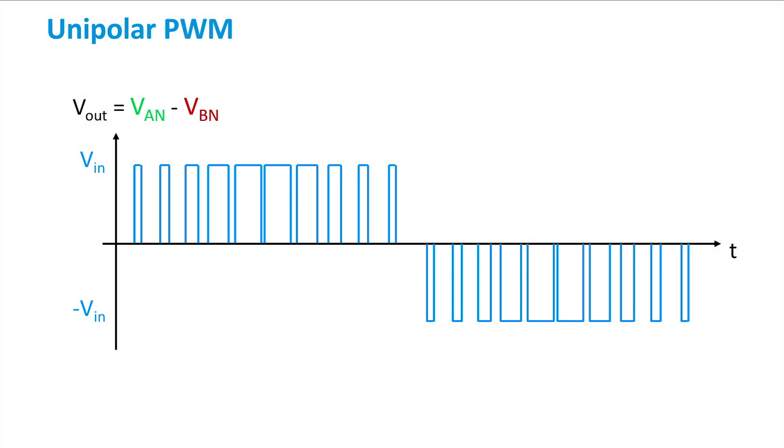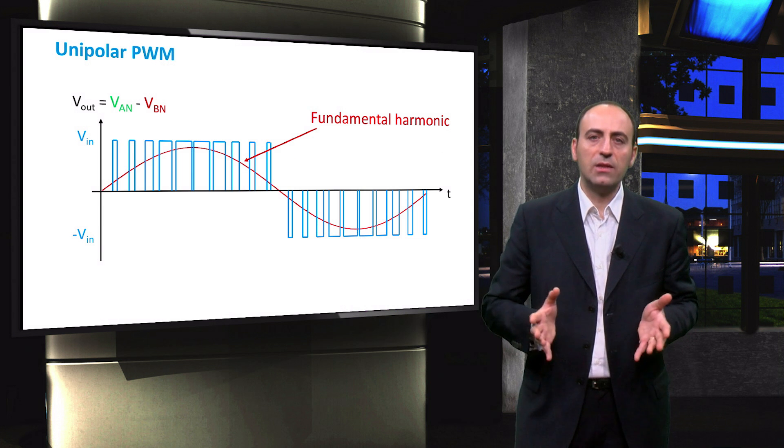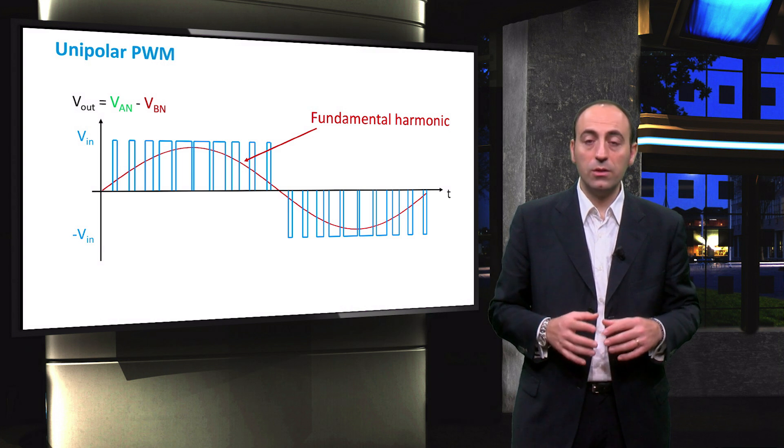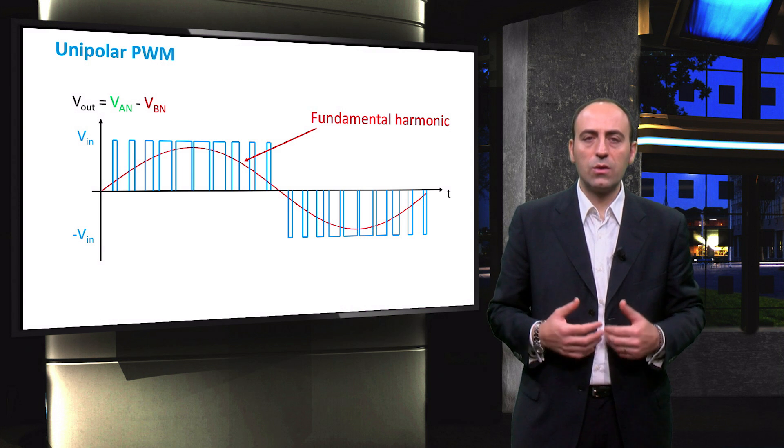Just like the bipolar case, a pure sine can be drawn from a Fourier analysis of the output signal. This sine is the fundamental harmonic which carries the real power delivered by the inverter. The most important advantage of the unipolar PWM scheme over the bipolar one is a lower harmonic content which translates into less signal distortion that needs to be filtered by the inverter.